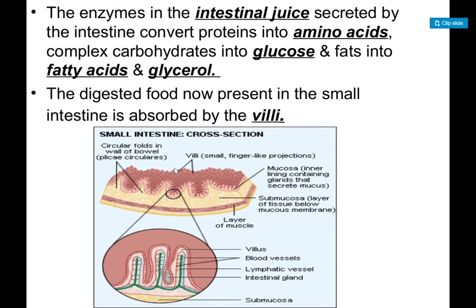The digested food is then absorbed. If you can see a picture here, there are some finger-like structures in the small intestine — which we call villi — and our digested food is absorbed through them.